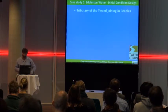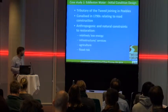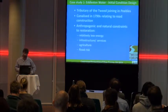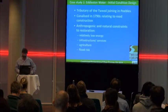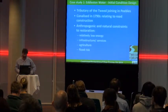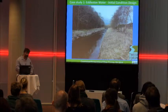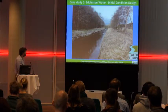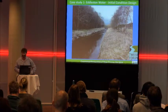The Edelson Water is a tributary to the Tweed in the Scottish Borders, joining the Tweed at Peebles. It was canalised over about a five-kilometre section in the 1790s relating to road construction. There are significant anthropogenic and natural constraints to restoration - it's relatively low energy, there are significant constraints such as roads, property, and power lines, there's agriculture in the catchment and floodplain, and some flood issues. Embankments on both sides disconnect the channel from its floodplain with very limited physical heterogeneity.